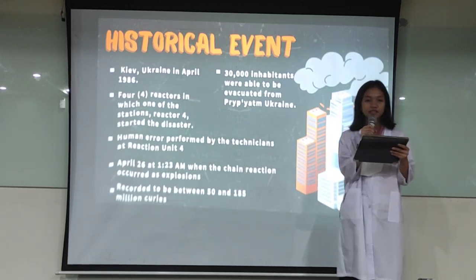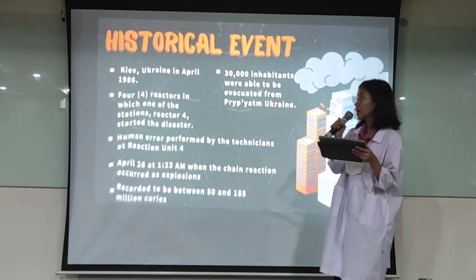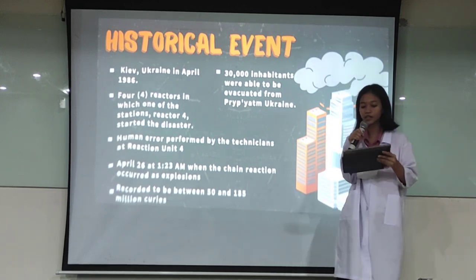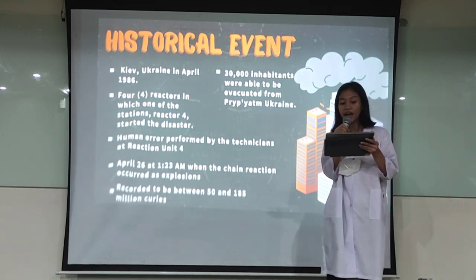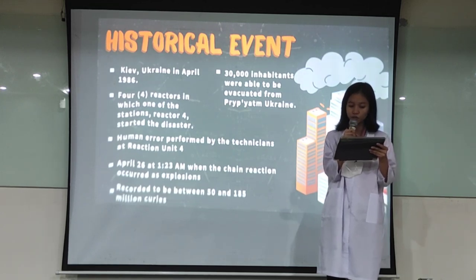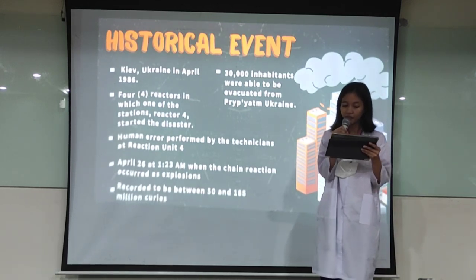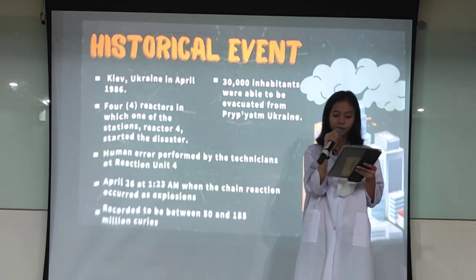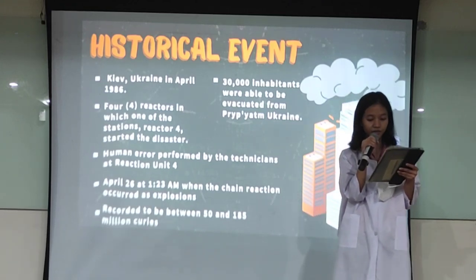The Chernobyl disaster is considered the worst nuclear disaster. It happened in Ukraine in April 1986, and the nuclear power plant had four reactors. The disaster started in nuclear reactor four, and it was caused by human error performed by the technicians at the reactor. On April 26th at 1:23 a.m., a chain reaction occurred and it started with explosions. Radioactive materials were released from the reactors into the atmosphere, causing a meltdown. The government thought of a solution to help reduce the radioactive materials in the reactor. They used robots in attempting to remove these materials; however, even the robots were not strong enough to withstand radiation.